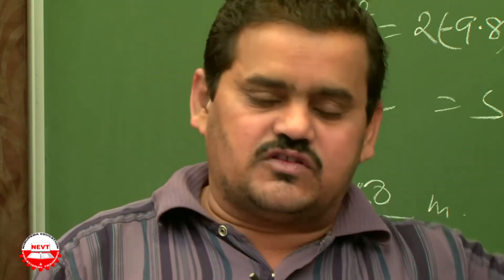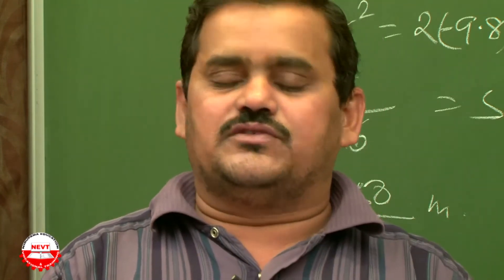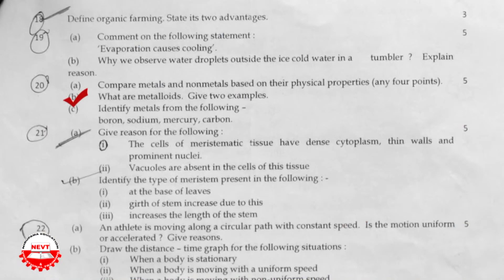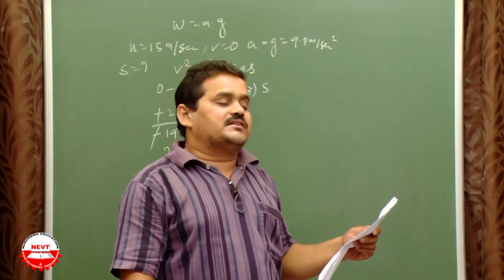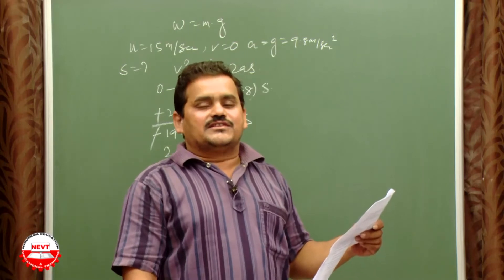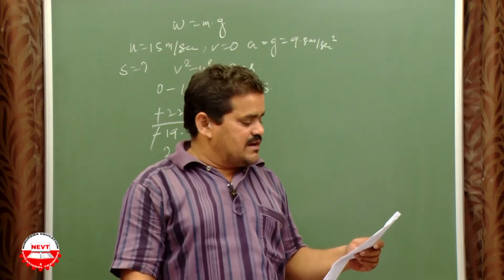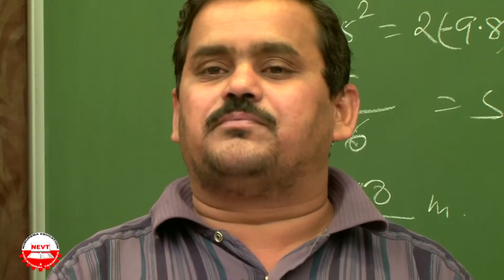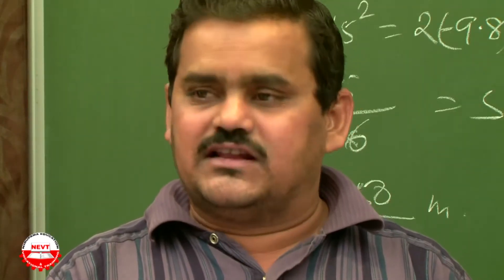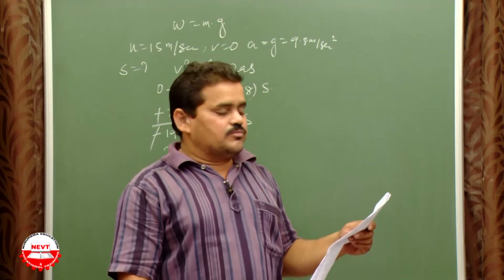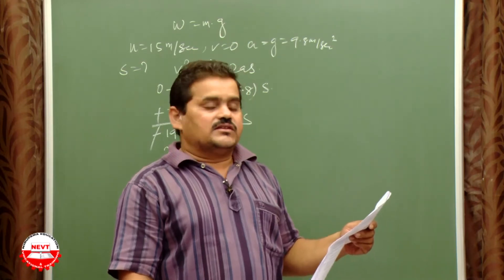Second part: what are metalloids? Give two examples. Metalloids are elements that have properties of both metals and non-metals. Examples: boron and silicon. Identify metals from the following — boron, sodium, mercury, carbon: sodium and mercury are metals; boron is a metalloid; carbon is a non-metal.